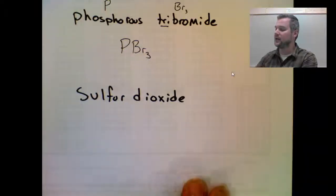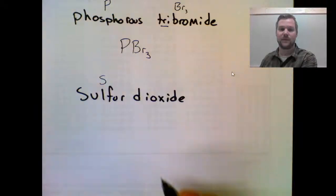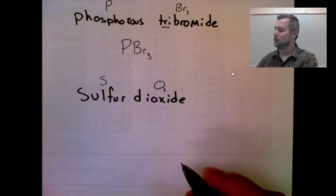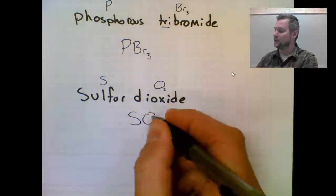Sulfur dioxide. Sulfur is just S. Again, no prefix. Di is going to be two on the oxide, so O sub two. Formula is SO2.